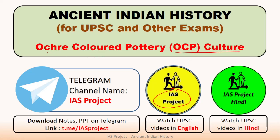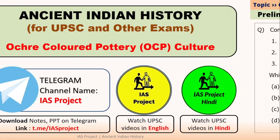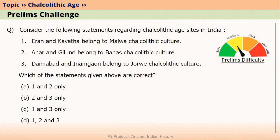OCP culture is also called as Ochre Coloured Pottery culture. Before we go into the lecture, please try to answer this question. Consider the following statements regarding Chalcolithic age sites in India. Three statements have been given here.